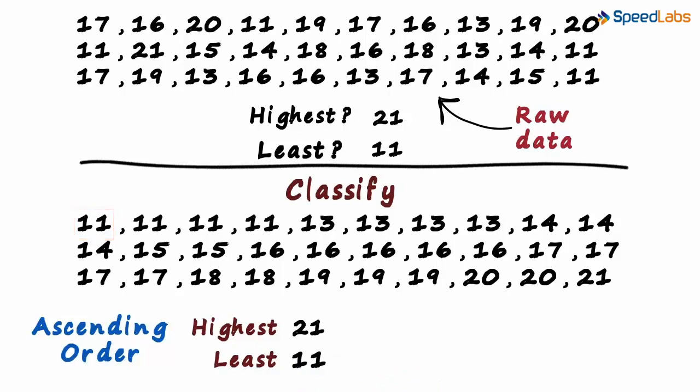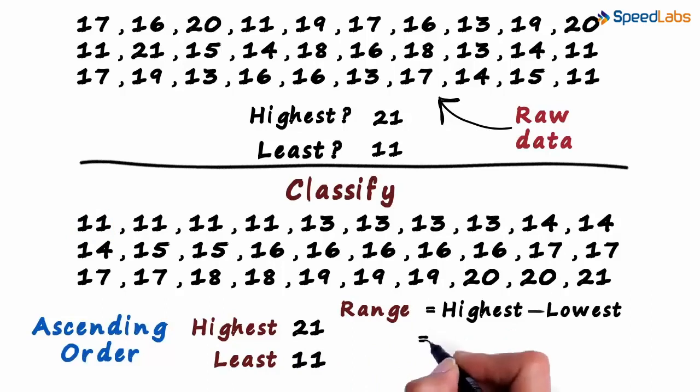There is another concept called the range of data. It is defined as the difference between the highest and the lowest number. In our example, it will be 21 minus 11 which equals 10.